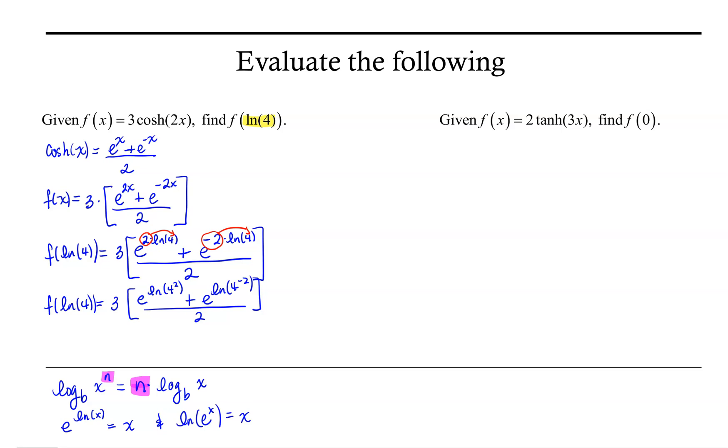So taking advantage of the inverse property between the two functions, f of the natural log of 4 is going to equal 3 times, e and ln are inverses, so I'm going to get 4 squared. And e and ln are inverses, so I'm going to get 4 to the negative 2 power, all over 2.